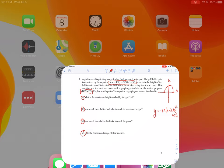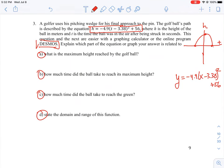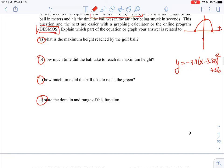Now that we've identified the shape of our graph and our points, we can answer the questions. What is the maximum height reached by the golf ball? The vertex is what we're looking for, and the vertex was at 3.38 seconds and 56. So the maximum height is equal to 56 in whatever units they're working at.